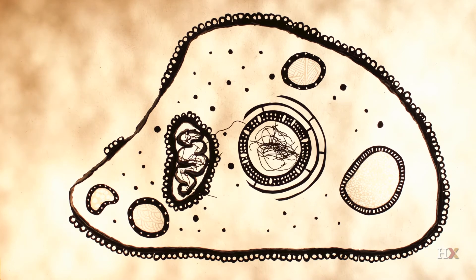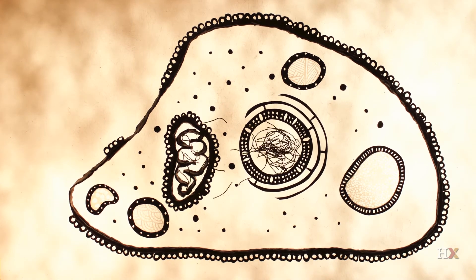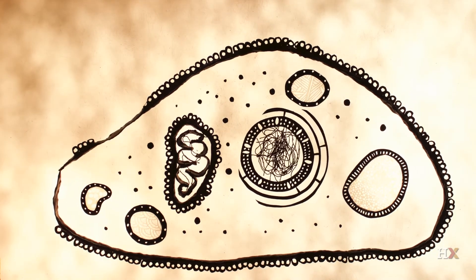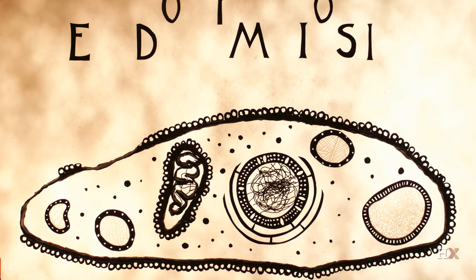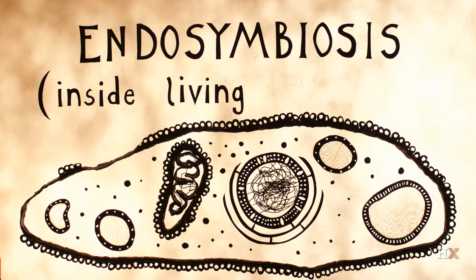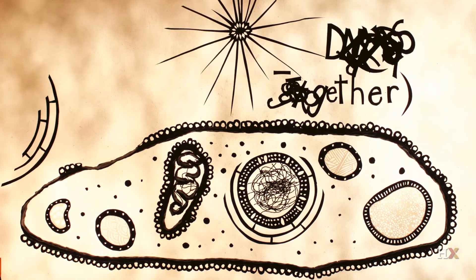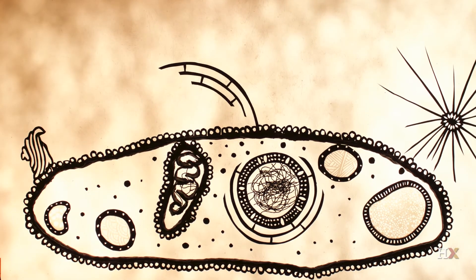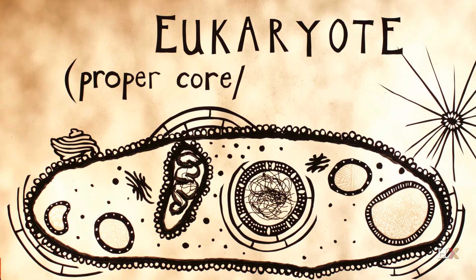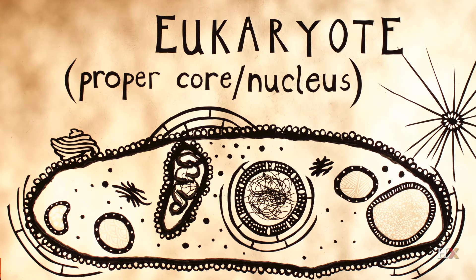Over generations, the two cells' descendants exchanged DNA and became dependent on each other for survival, living as one organism in an evolutionary process called endosymbiosis. This mutually beneficial relationship only deepened over time, allowing the evolution of what we know today as the eukaryote, with a true nucleus and organelles that complete specialized tasks.